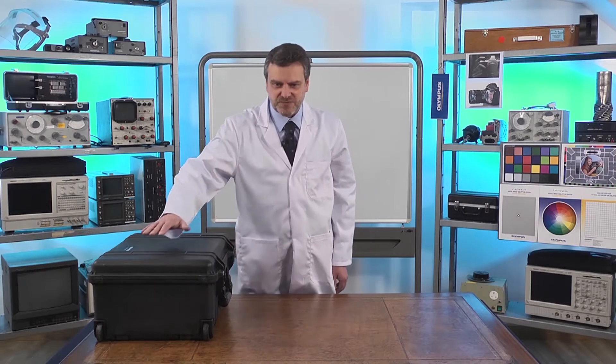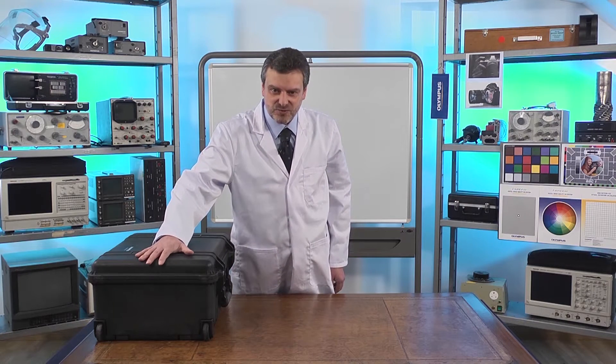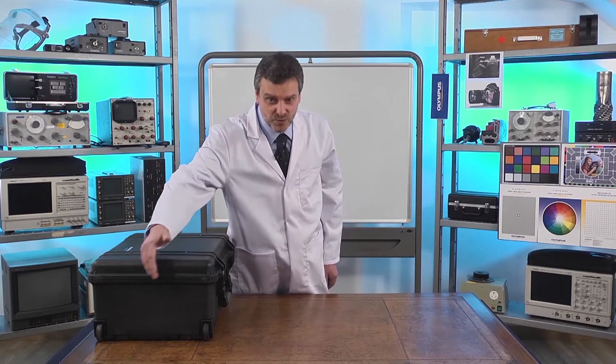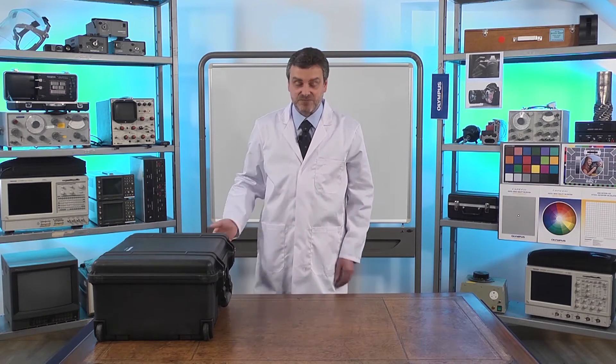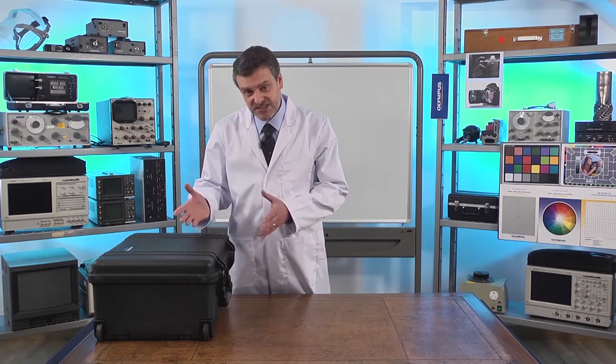When you receive your iSpeed 3 it will come in one of these: a tough and rugged Peli case with wheels and a towing handle so you can move it around easily. Let's look inside.